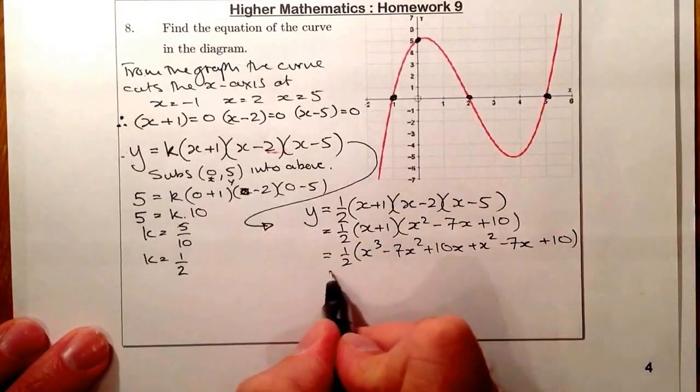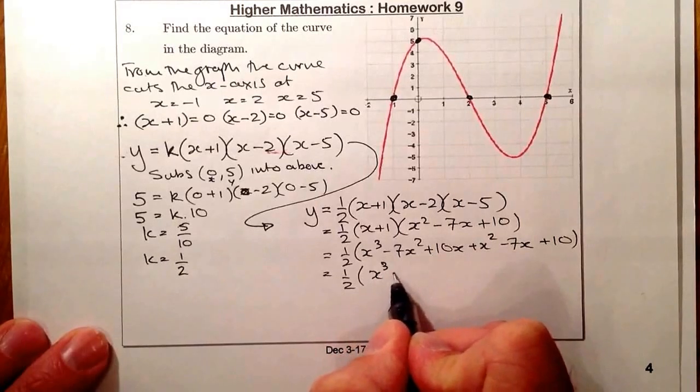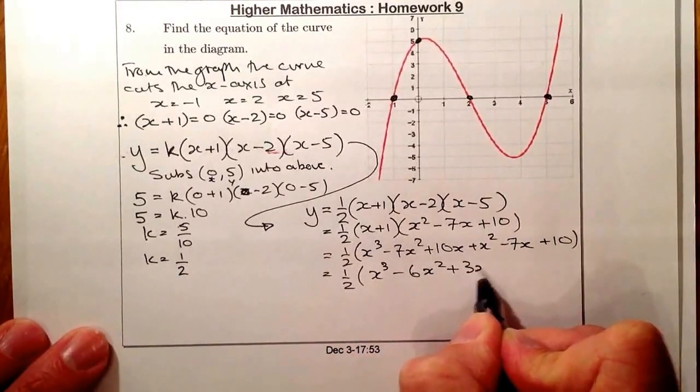I'll gather them up, gather the bits up, and then I'll multiply out by a half. So what I've got is x cubed, minus 6x squared, plus 3x, plus 10.